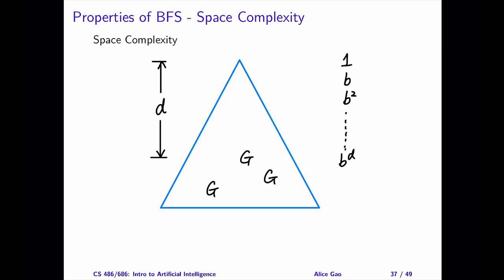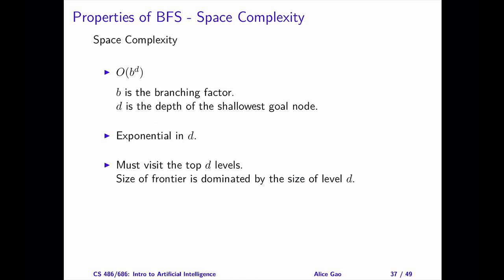At level 0, we have one node. At level 1, we have at most B nodes. At level 2, there are at most B squared nodes. At level D, we have at most B to the power of D nodes. Therefore, the space complexity is O of B to the power of D. This is exponential in D, the depth of the shallowest goal node.